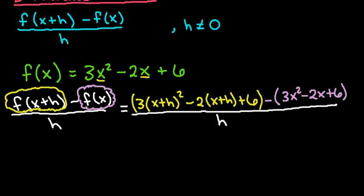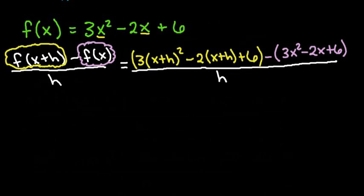For this, you do have to be very careful when you are simplifying to make sure that you distribute correctly. Your goal at the end is everything that does not have an h should cancel out.